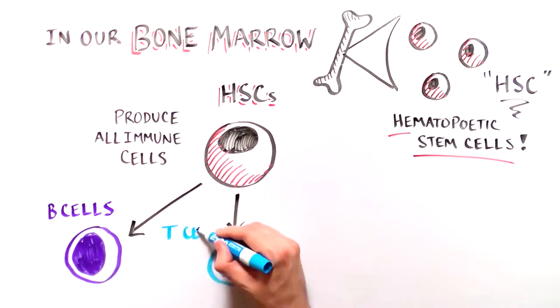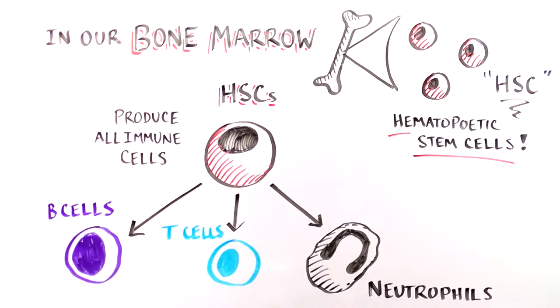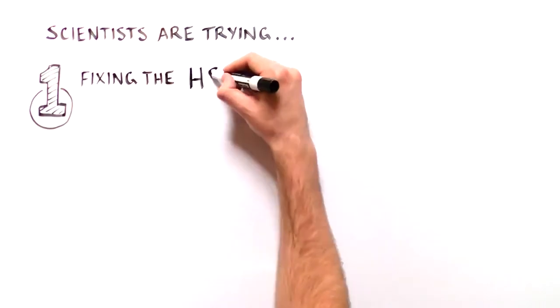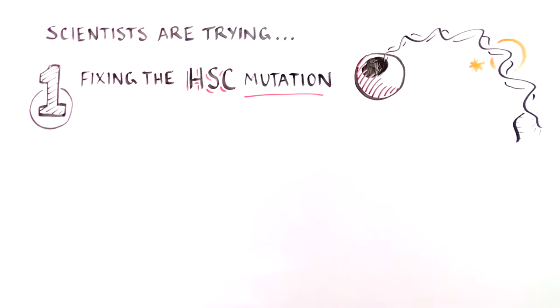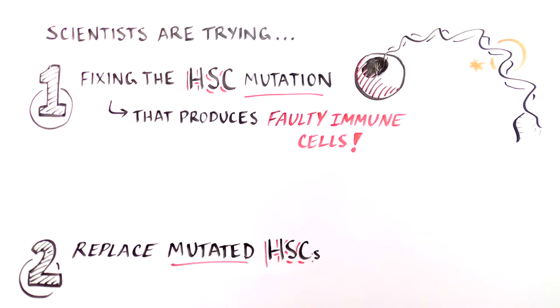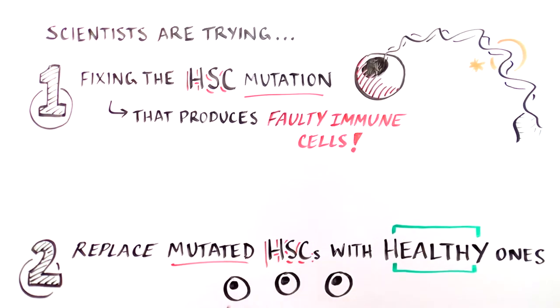However, if the HSC has a mutation in a critical immune system gene, all of the immune cells it produces will be defective. Scientists are trying several complementary approaches: fixing the gene mutation in the HSC and getting rid of all of the mutated HSCs and replacing them with normal ones.